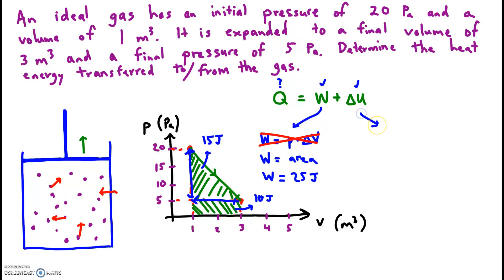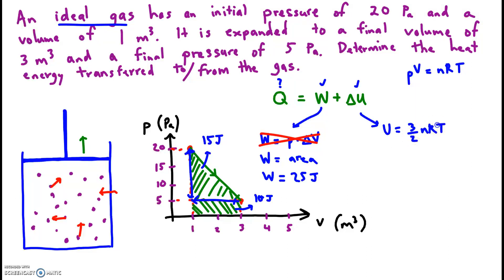The change in internal energy. To find this, we have to think back to our equations for an ideal gas. We have the ideal gas law, the equation of state. And the other equation we have with internal energy is u equals 3 halves nRT, which is in our data booklet. We studied this back in topic 3. So if nRT is equal to PV, we could write this as 3 halves PV.